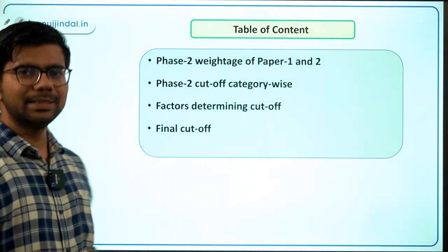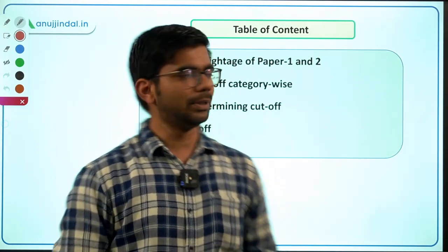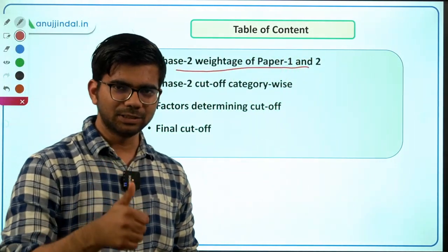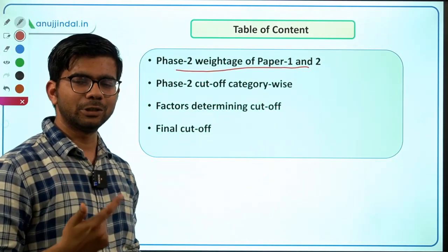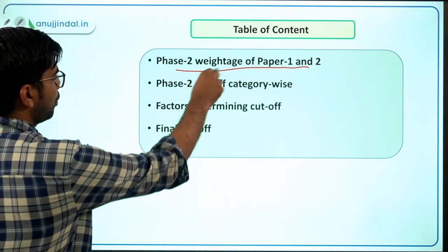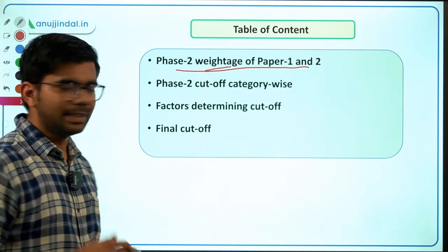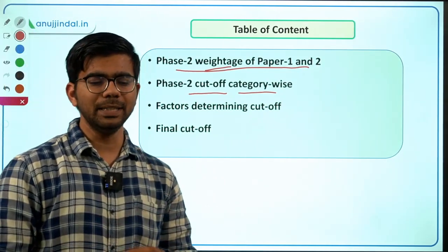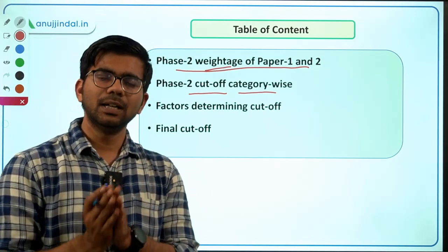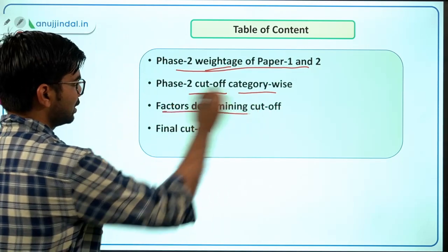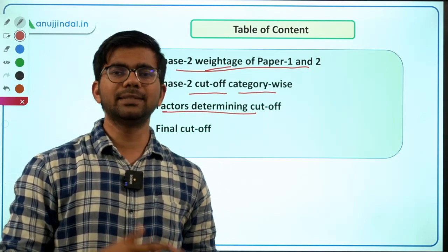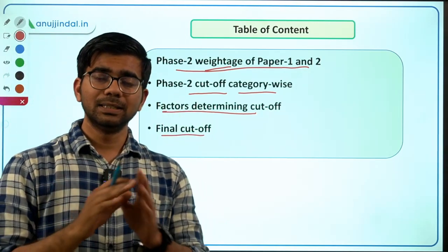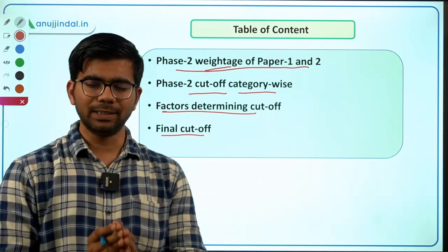Let us start the session. Aaj ke session mein we will discuss Phase 2 weightage of paper 1 and paper 2. Phase 2 mein there are two papers — one is English descriptive and one is commerce and accountancy, costing, economics — the six subjects. We will discuss the minimum qualifying criteria, then the Phase 2 cutoff category-wise, and finally what was the final combined cutoff including interview marks.